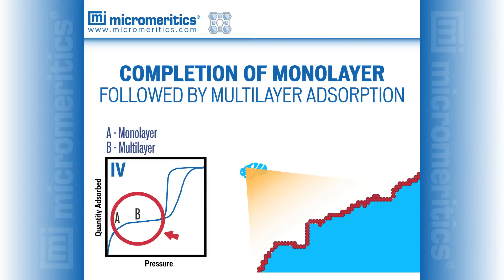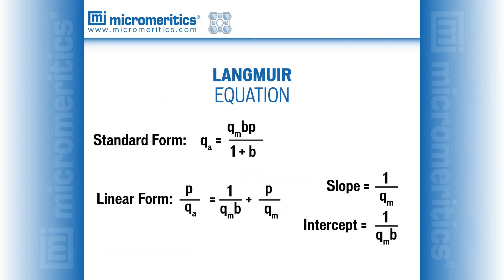The Langmuir or BET models may be used to assess the monolayer capacity and then estimate the specific surface area. The Langmuir equation and its linear form are presented here. The standard form describes the Langmuir isotherm where the quantity adsorbed is a function of pressure. The symbols are as follows: P is the equilibrium pressure; Q_A is the quantity of gas adsorbed at a specific pressure; Q_M is the quantity of gas required to produce a monolayer; and B is a Langmuir constant. If the isotherm data conforms to the Langmuir model, a simple graph of pressure divided by quantity adsorbed versus pressure will yield a linear relationship. The slope of the linear region, which equals 1 over Q_M, allows the numerical value of the monolayer capacity to be determined.